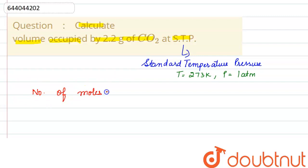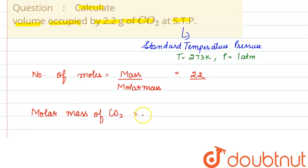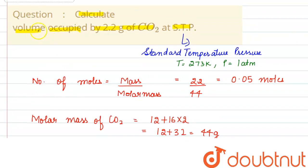Let us calculate the number of moles first. The formula is: number of moles = given mass divided by molar mass. Given mass is 2.2 grams. The molar mass of CO2 is calculated as: carbon is 12, plus oxygen is 16 multiplied by 2, giving 12 + 32 = 44 grams per mole. Substituting, we get 0.05 moles of CO2.